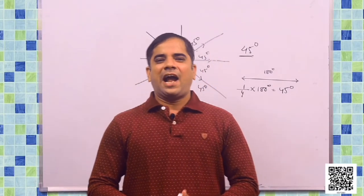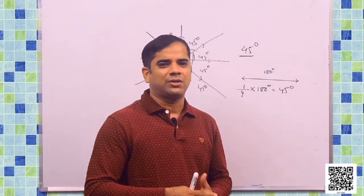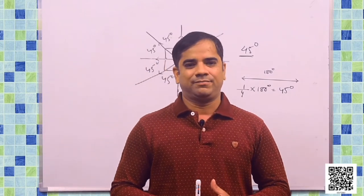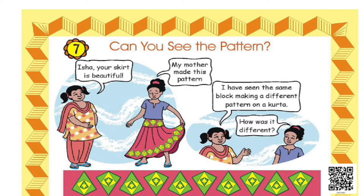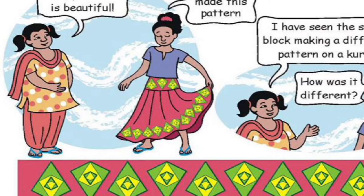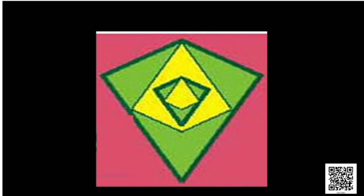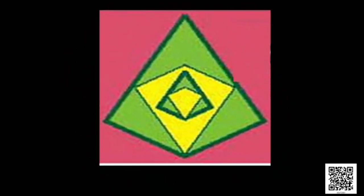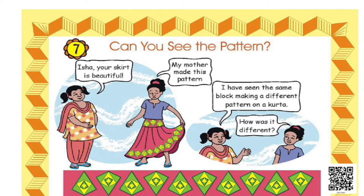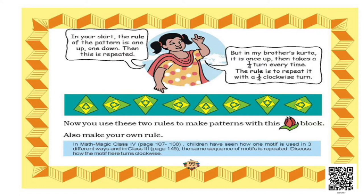As I have discussed regarding the pattern and how the pattern goes, now let us go through your book page by page. So in the first page, there is a conversation between Isha and a friend of hers. They are talking about the pattern of dresses. Isha is wearing a skirt which has the pattern of blocks — one up and one down, and the pattern is repeated. Her friend is talking about the pattern of the same blocks in her brother's kurta, which has a one-fourth turn every time. The rule is to repeat it with a one-fourth clockwise turn. The skirt has an up-and-down pattern, but the kurta has a turn of one-fourth and it is repeating clockwise.